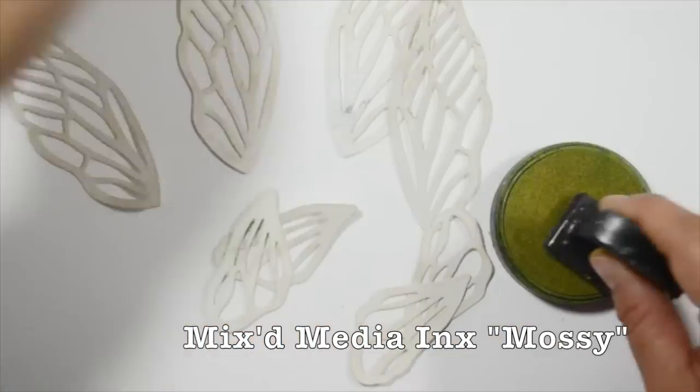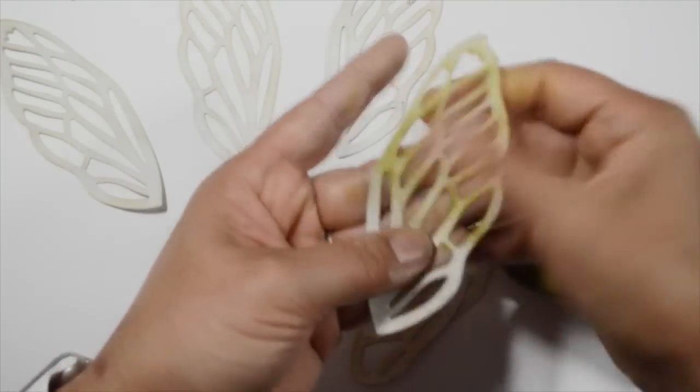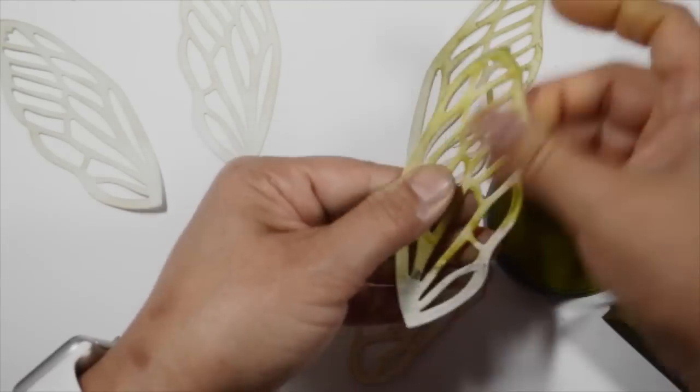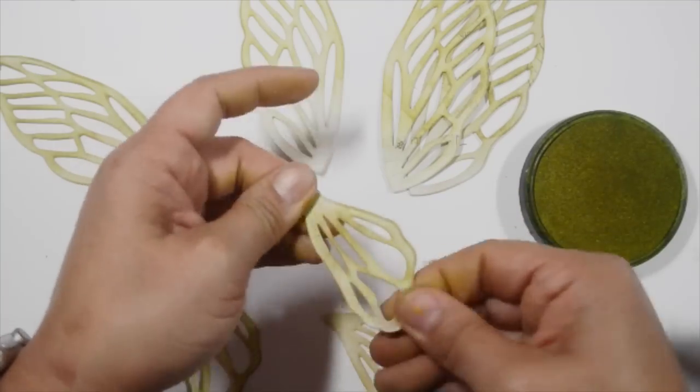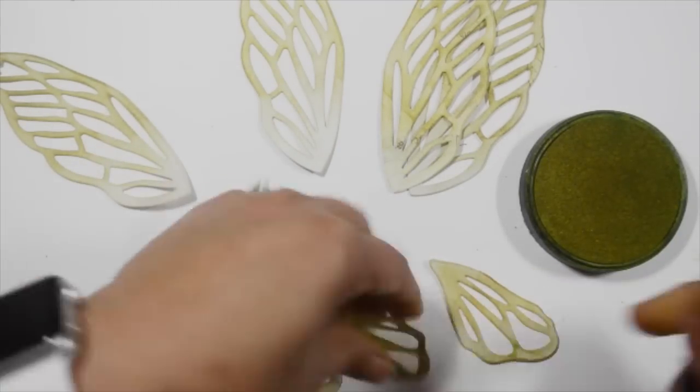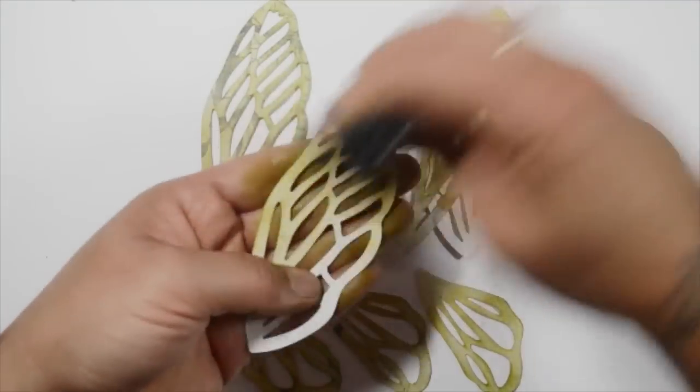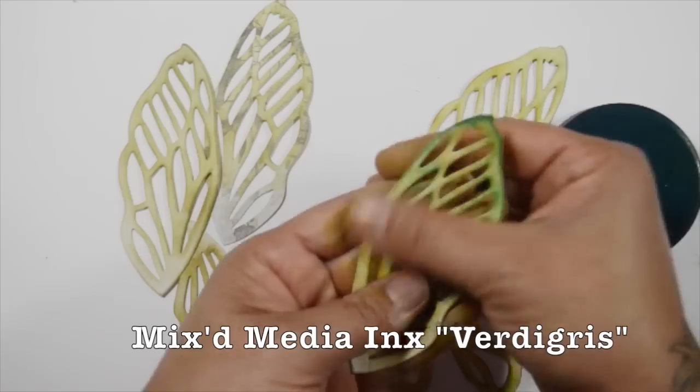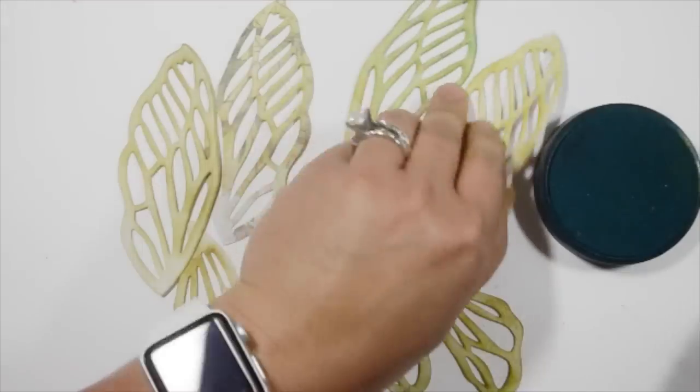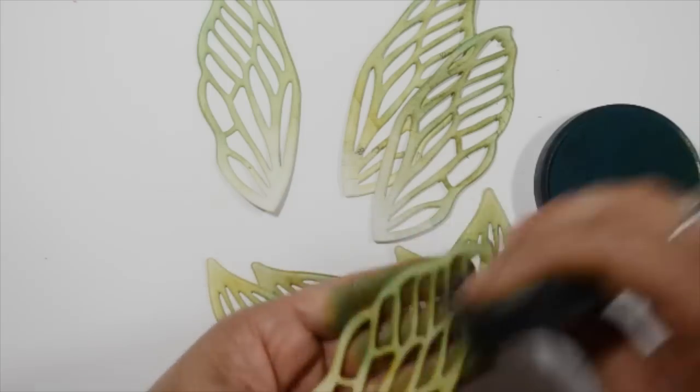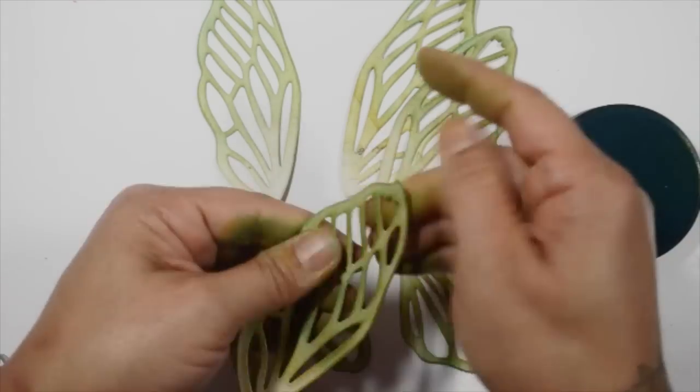Then I added the mixed media inks in mossy. Now something that I didn't mention earlier when I was talking about die-cutting these wings is that you could actually use the outside die all by itself and you'd have a solid wing, or you could use the outside die, die-cut that, and then use the inside that is the detail on that and just emboss it. So you'd have a solid wing with just the embossed detail of the wing on the inside. Now I'm using a darker green called verdigris, and they all mix and blend really well together.